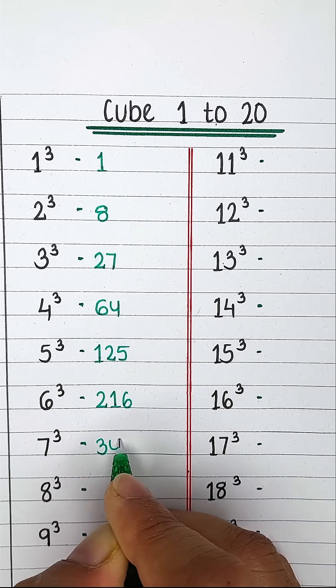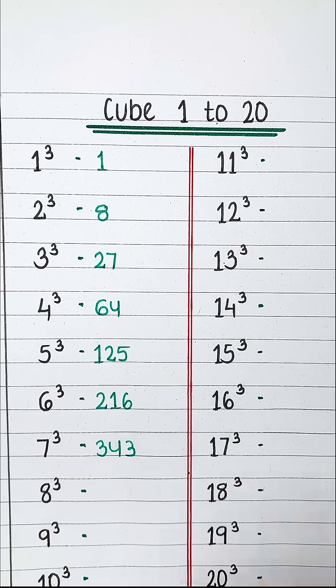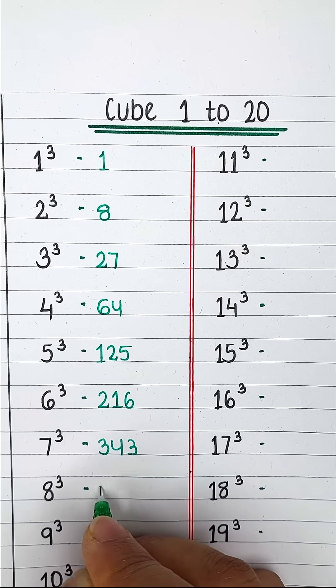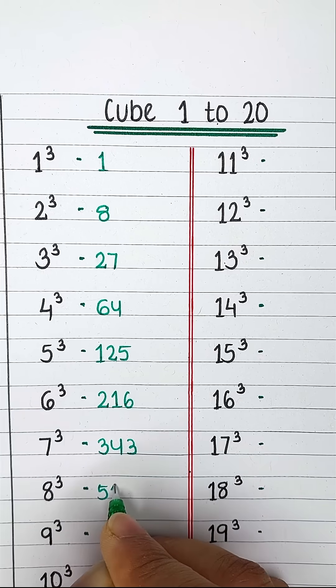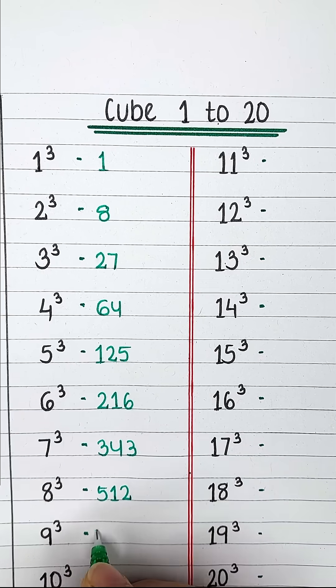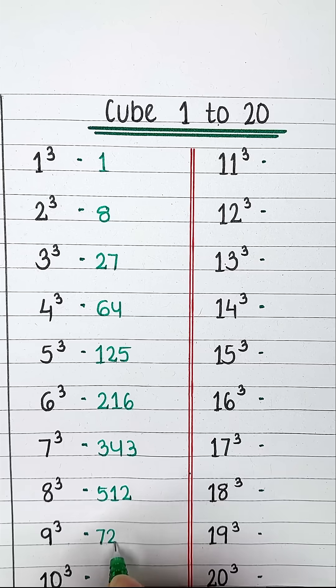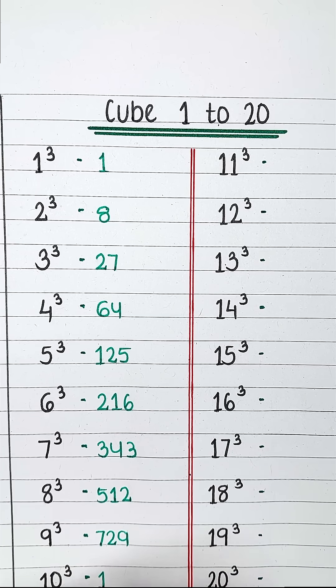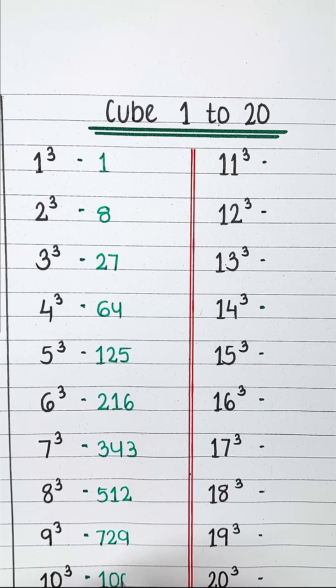Cube of 6 is 216. Cube of 7 is 343. Cube of 8 is 512. Cube of 9 is 729. Cube of 10 is 1000.